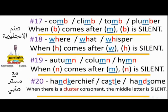Rule seventeen: comb, climb, tomb — don't say 'tomb' as 'tom', say 'tomb'; plumber — don't say 'plumber' with the B. The B is silent because it comes after M. So say 'comb', 'climb', 'tomb', 'plumber'. Rule eighteen: where, what, whisper — in British English you can find the H in the phonemic transcription, but it's not actually pronounced. The H comes after W, so H is silent.